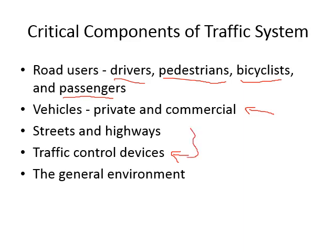Streets, highways, and traffic control devices together form the infrastructure of the road. Then we have the general environment, which means anything not part of the other four groups but which can still affect traffic. For example, a school beside the road will obviously affect traffic and pedestrians coming out of the school. Similarly, weather conditions, trees, light poles, and such things are all part of the general environment.